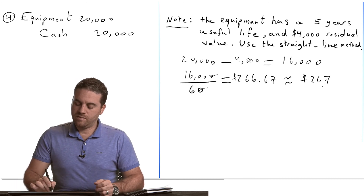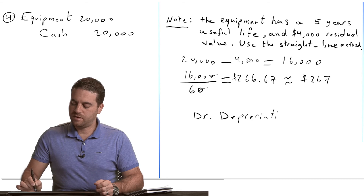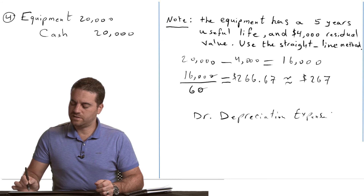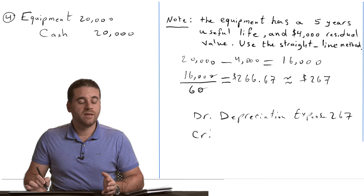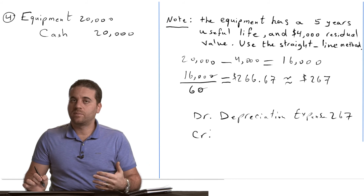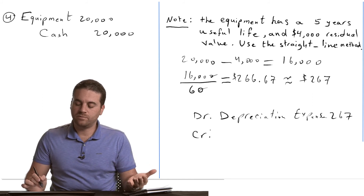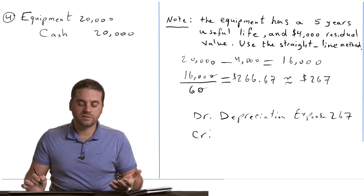The expense account is depreciation expense, so we increase depreciation expense by $267. For the credit side, someone might think we should credit the equipment account — which is logical, since that's what we did with supplies and prepaid rent. And we should also credit the equipment because it's decreasing. But here's the thing: yes, we're going to decrease the net equipment, but we're going to use a new account for the credit instead.